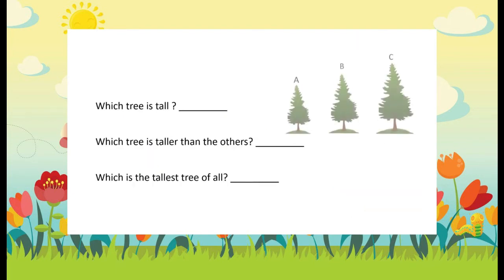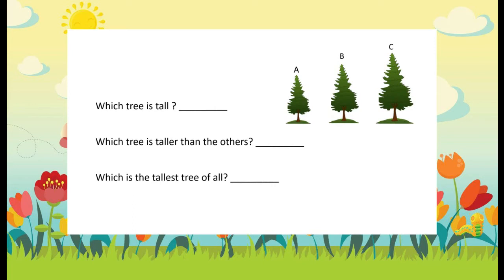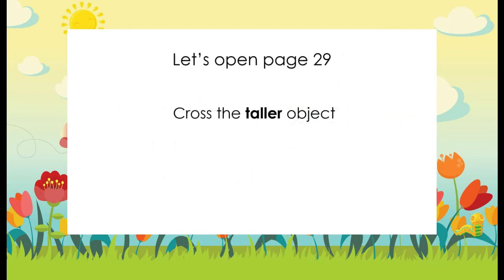So let's answer the three questions below the picture. Which tree is tall? That's right, that's letter A — let's write letter A. The second one: which tree is taller than the others? That's right, that's letter B. And which is the tallest tree of all? Yes, letter C! Excellent! Now let's move on to page 29.